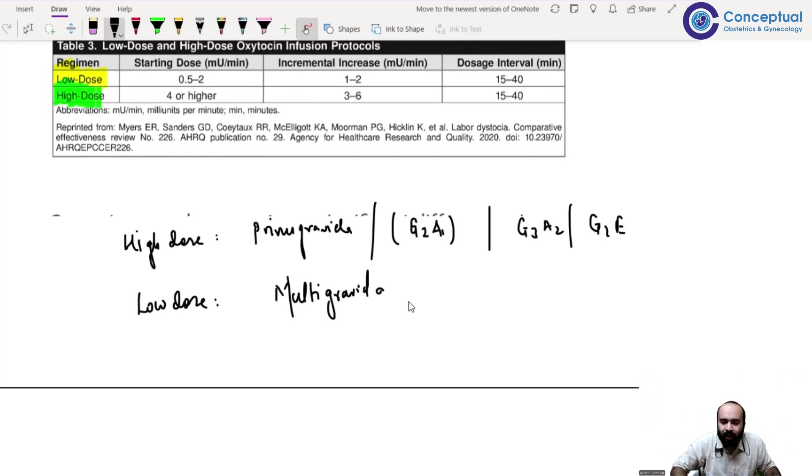Whereas high dose is given to primi gravidas. The reason is this uterus has never been accustomed to delivering before. It's a very rigid uterus, the cervix is rigid, and it requires a little more oxytocin or higher concentration. Anything like gravida 2 para 1 living 1, or gravida 3 para 2 living 1 or living 2 - low dose is for multi-gravid women, high dose is for primi gravidas who have never delivered before.